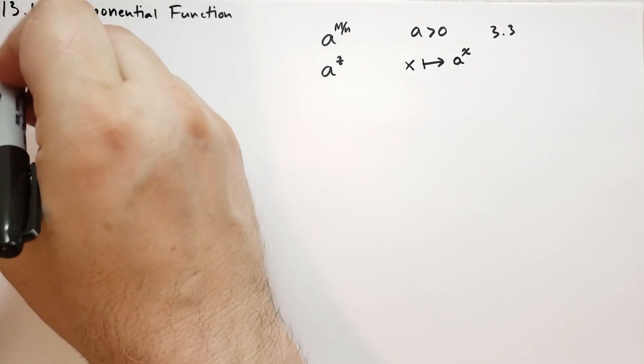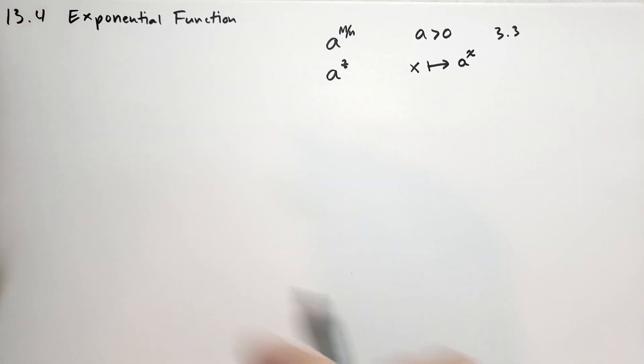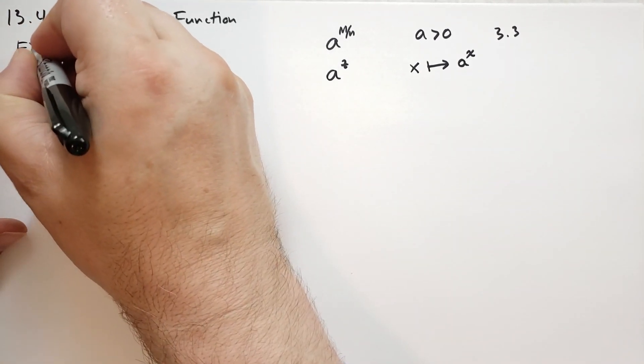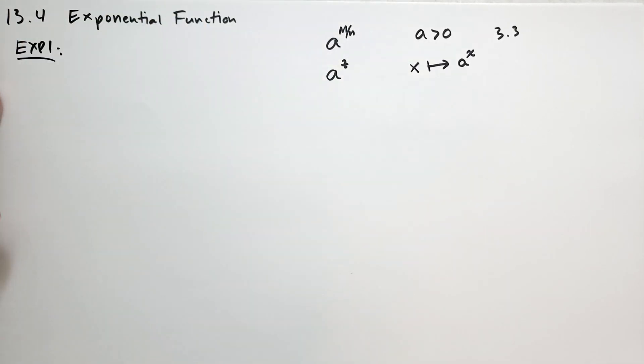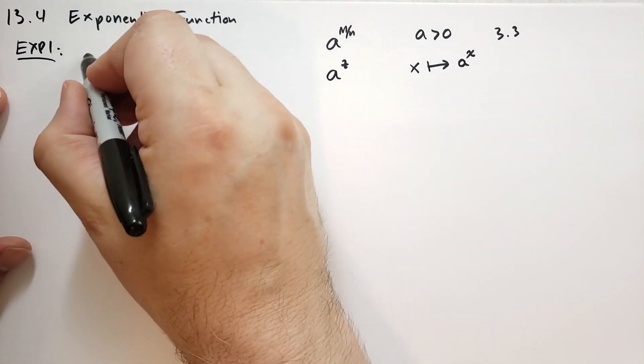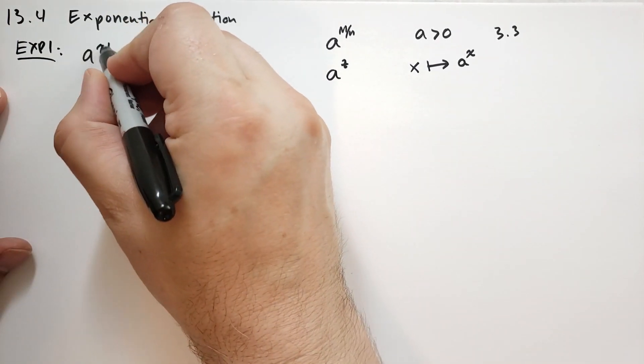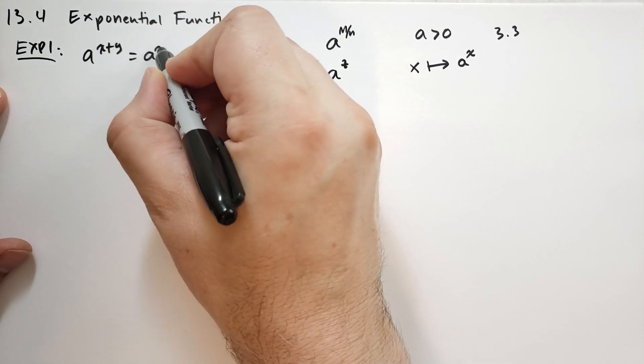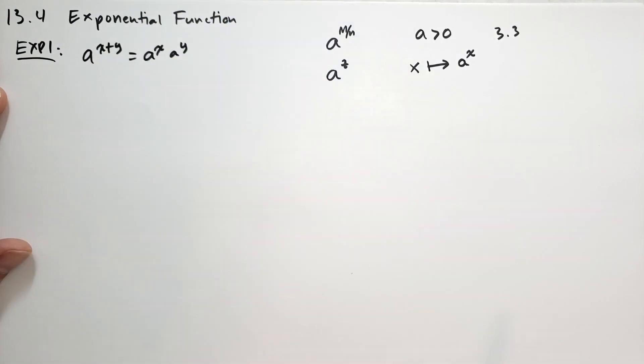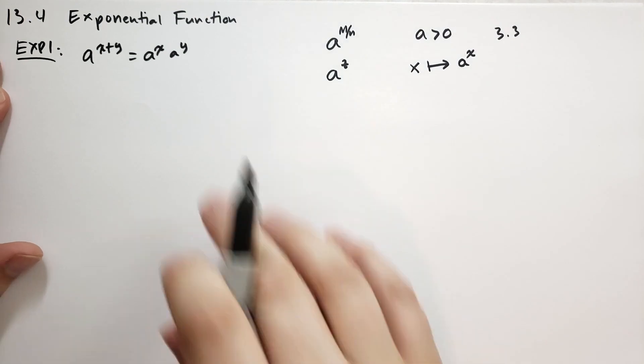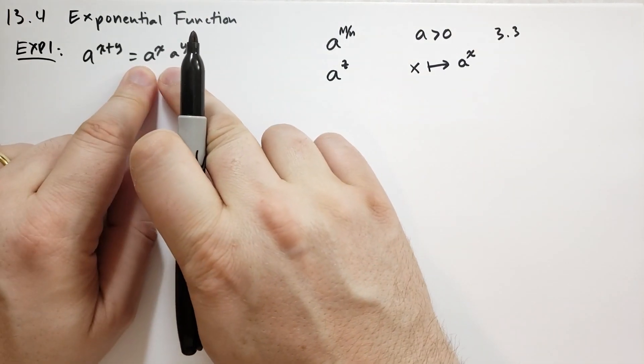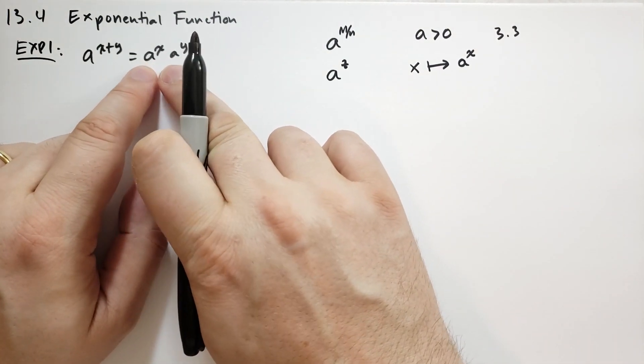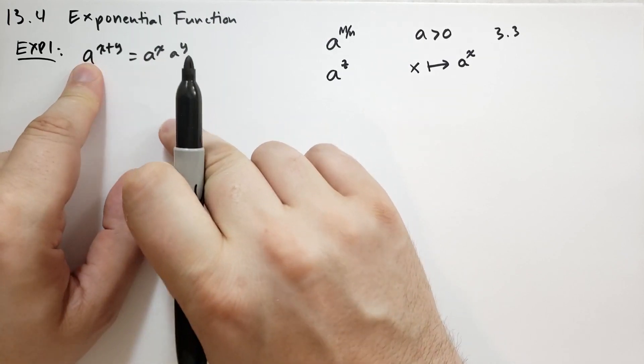We're going to have some rules. First we have EXP1. EXP1 says that when we take a^(x+y), that's the same as a^x times a^y. And if we have two with the same base and the exponents, we just add the exponents to the base. We can go backwards and forwards for this one.